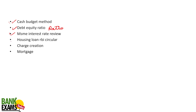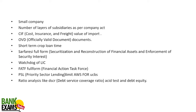Questions on MSME interest rate and housing loan appeared from RBI circulars. There was a question on charge creation and mortgage. A question on small companies and the number of layers of subsidiaries as per the Companies Act also appeared. CIF value of imports was asked, and officially valid documents from KYC guidelines — which are RBI guidelines — also featured.